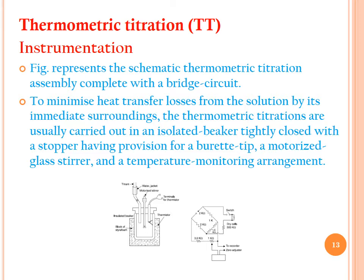This figure shows a schematic thermometric titration assembly complete with the bridge circuit. To minimize heat transfer losses from the solution to its surroundings, thermometric titrations are carried out in an insulated beaker tightly closed with a stopper. The assembly includes a titrant reservoir with a water jacket at the top, a motorized stirrer, thermistor terminals, a thermistor block of styrofoam used as a heat sink, and an insulated beaker inserted within the styrofoam block.